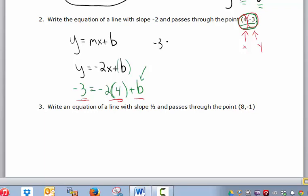So let's do that. Negative 3 equals negative 2 times 4 is negative 8, plus b, and I'm going to add 8 to both sides. And that gives me a b value of 5.